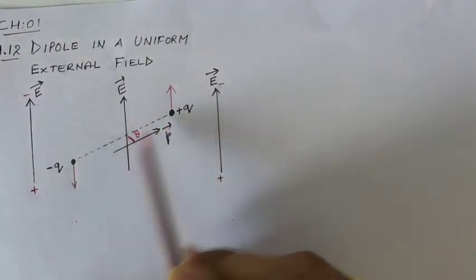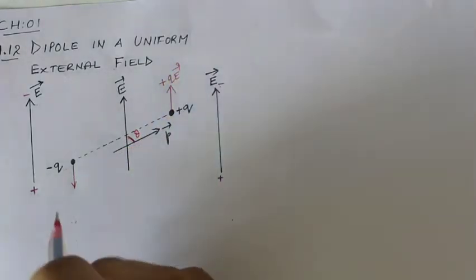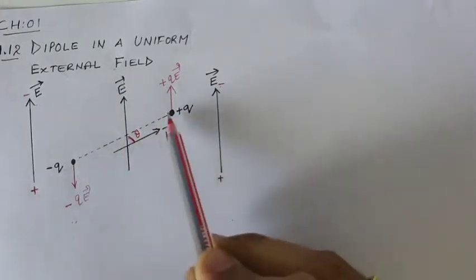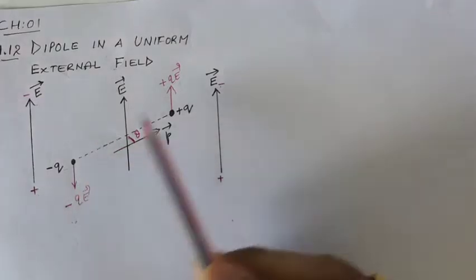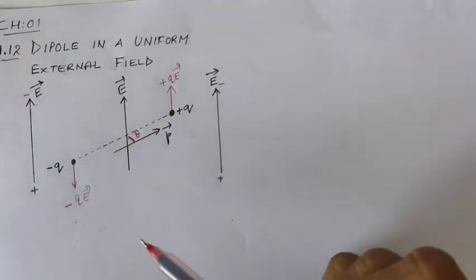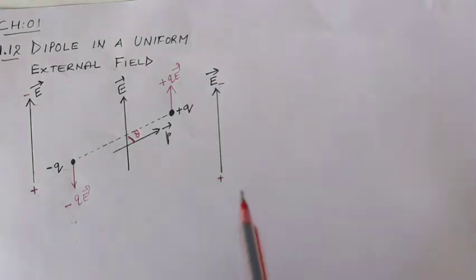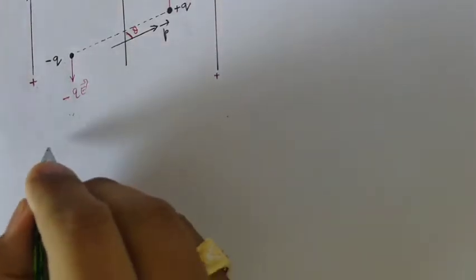The two forces, +qE and -qE, are equal in magnitude but opposite in direction. Both forces are opposite but they are not collinear; therefore they form a couple. As we know from Chapter 7 of Standard 11, a couple produces a torque.